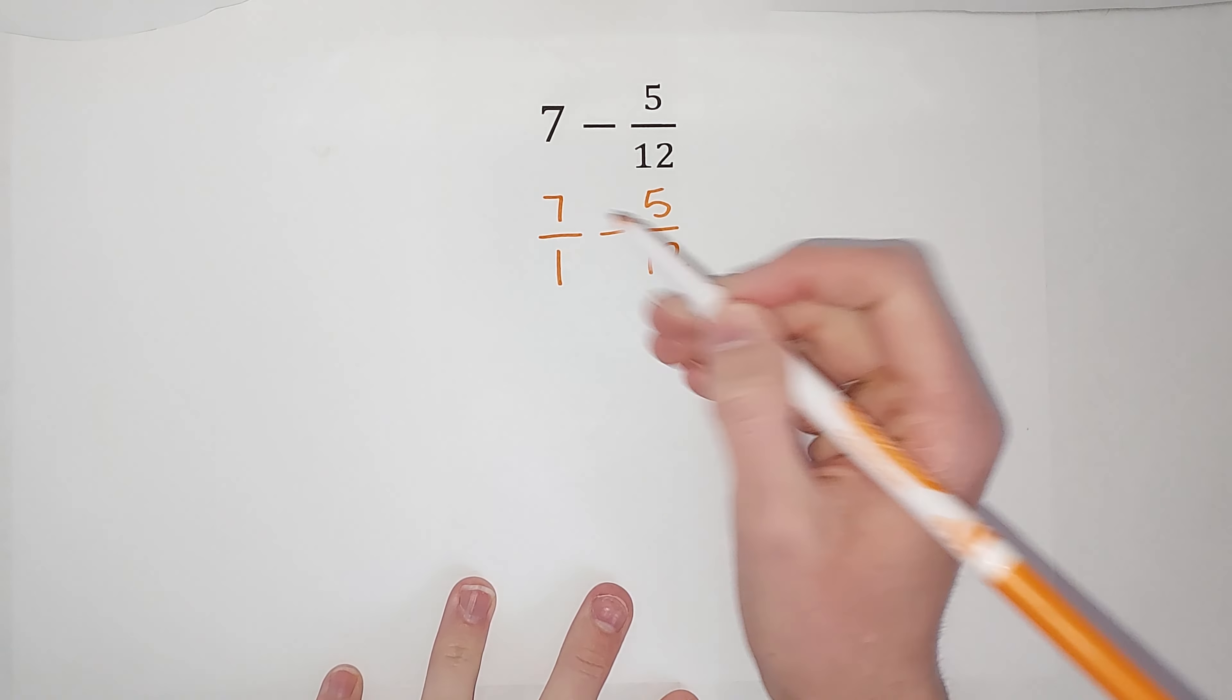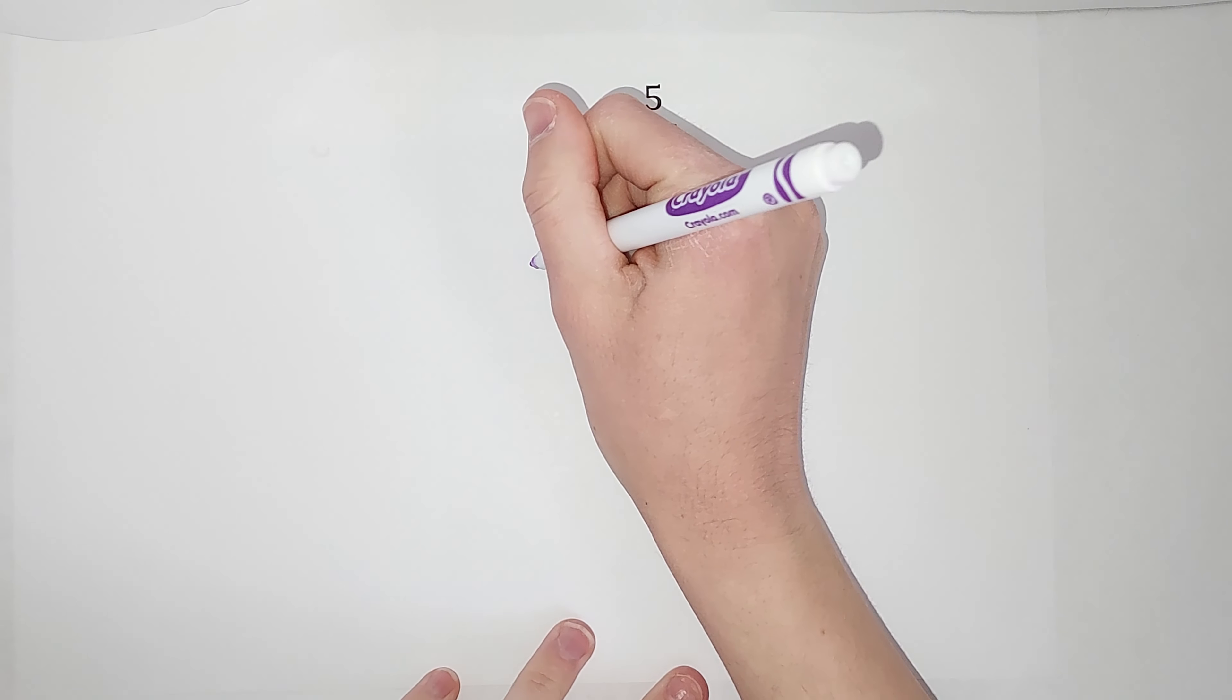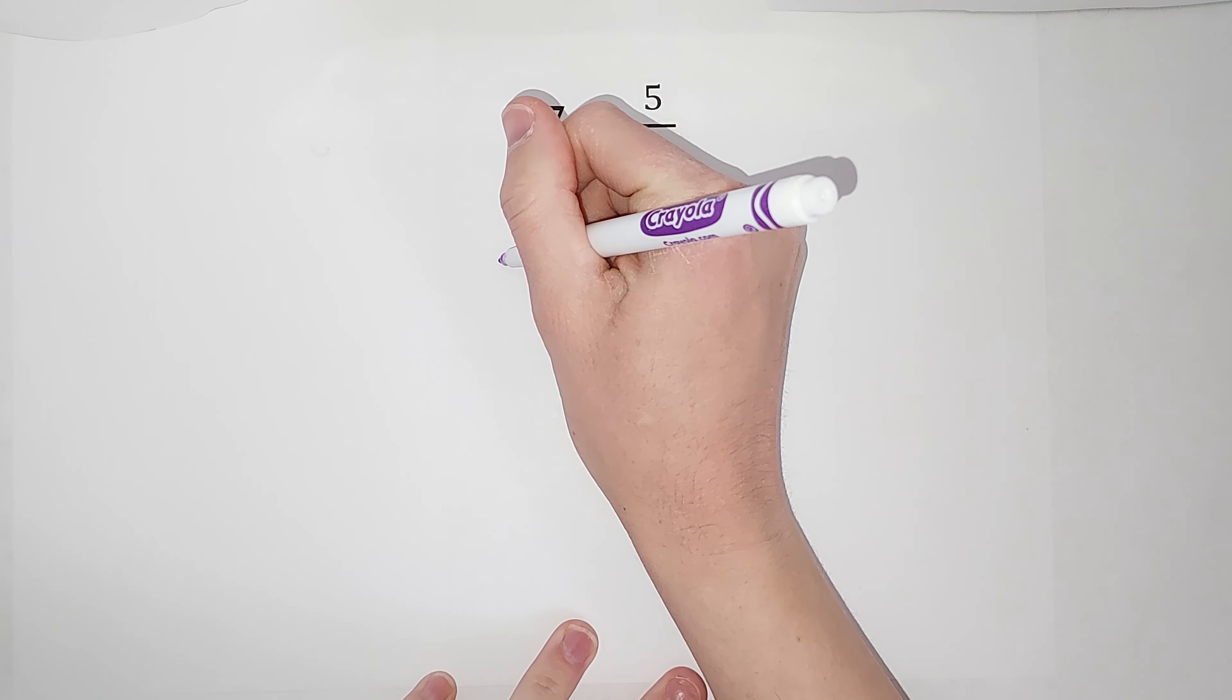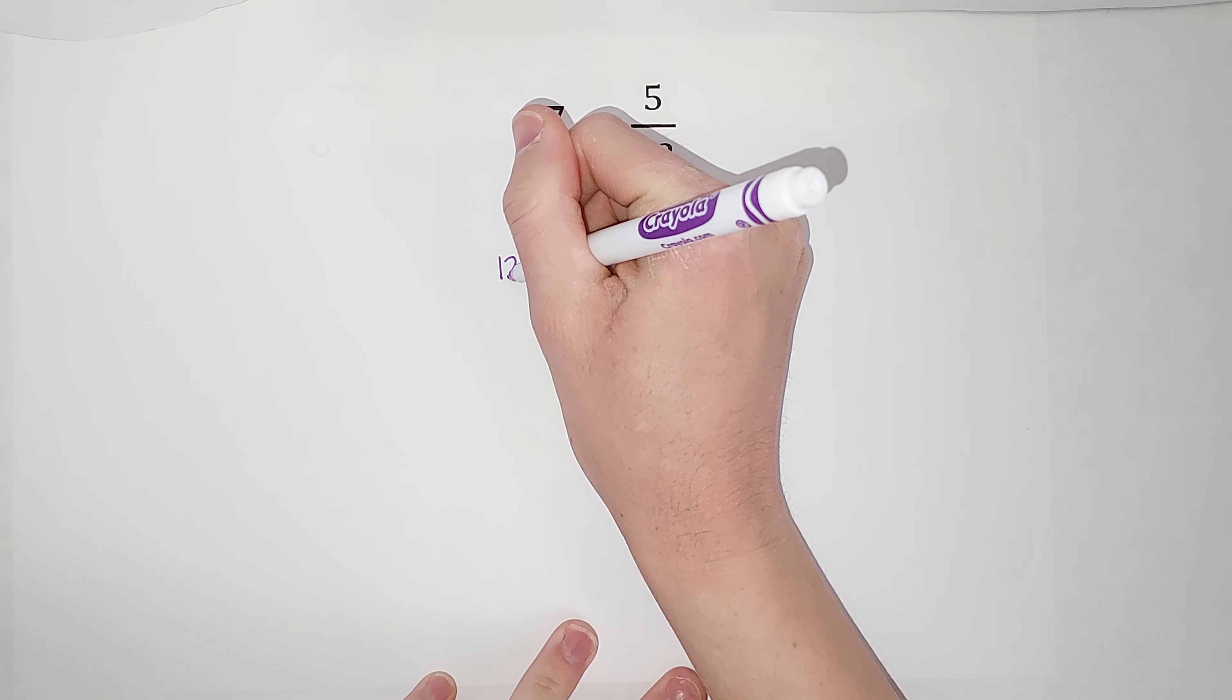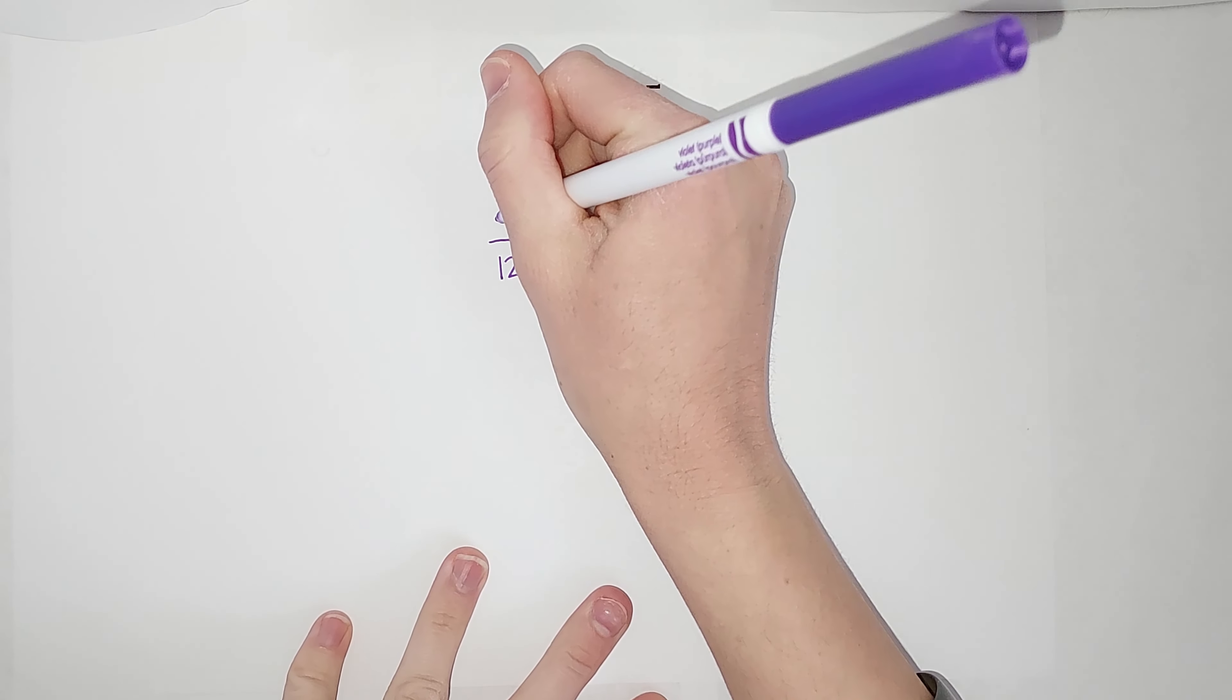So 1 times what would give me 12? Well, 1 times 12, right? You're like, you're breaking this down too small. Sorry. We're going to multiply by 12 on bottom, but I can't just multiply by 12, right? I need to multiply by 12 over 12.